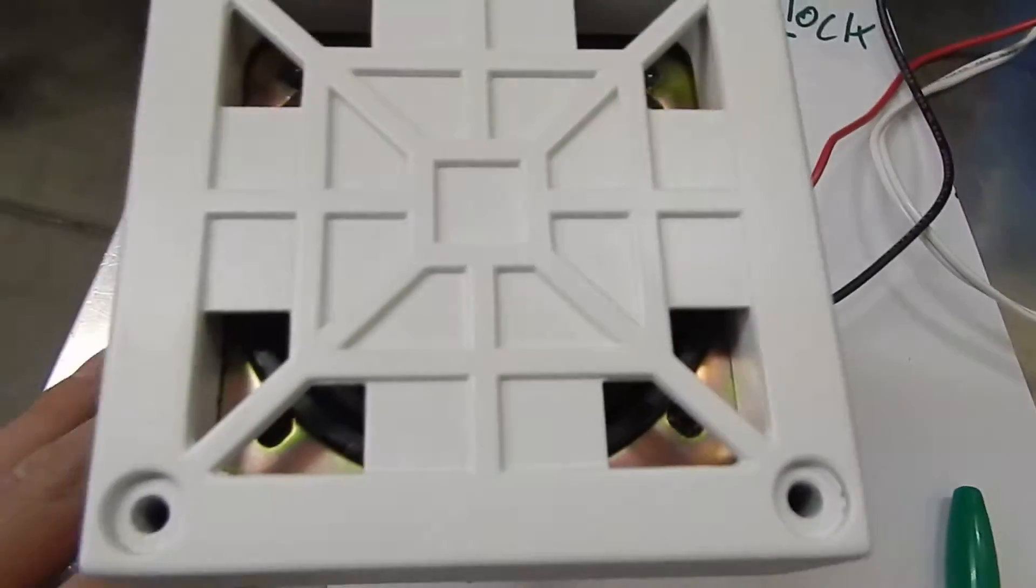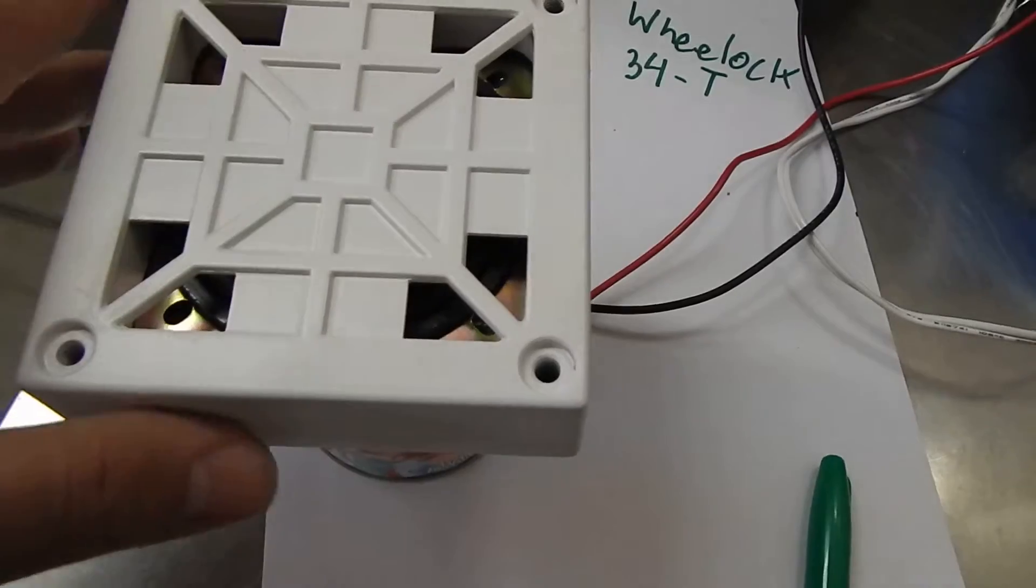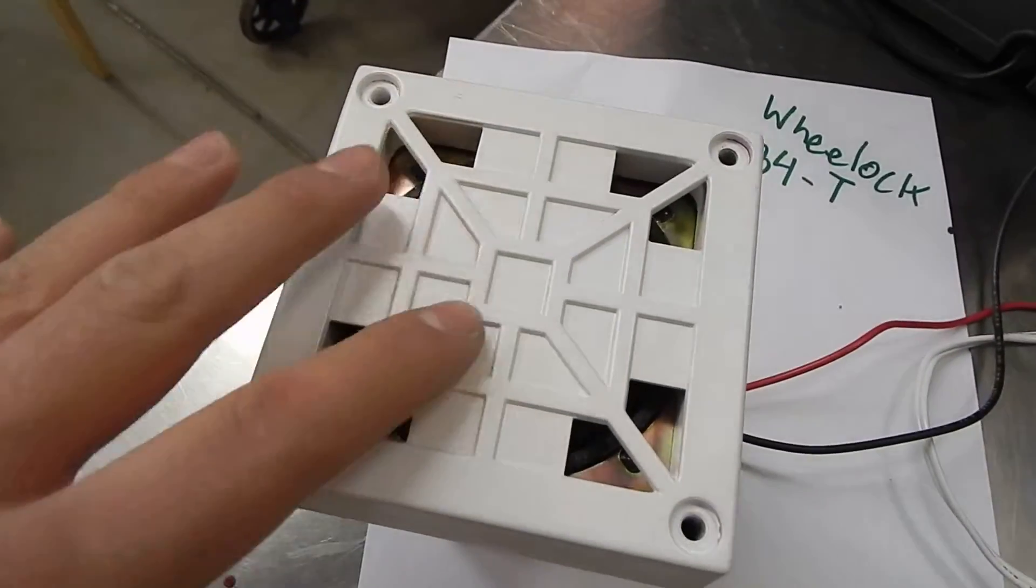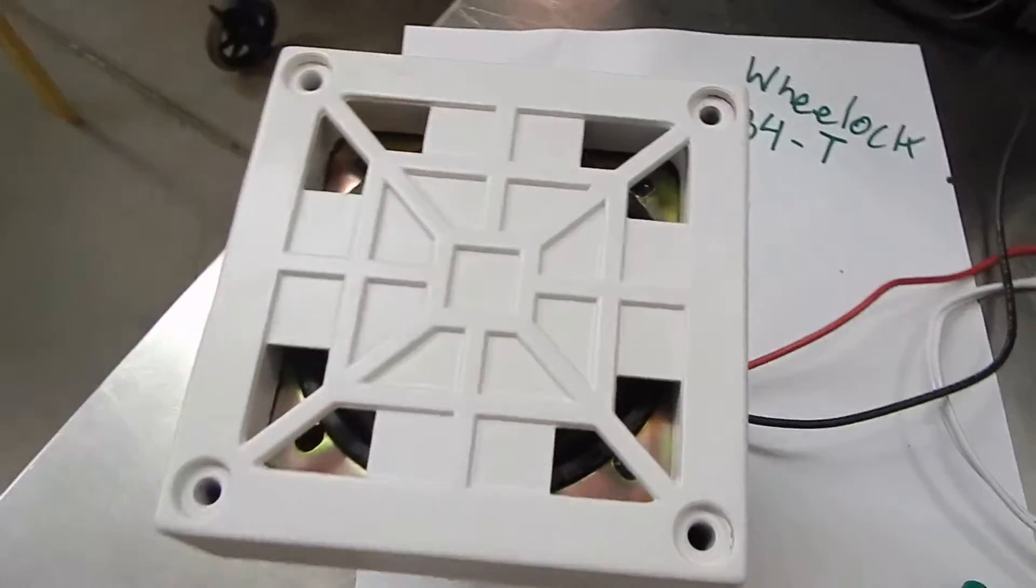This is my Wheelock 34T horn. As you can tell, I modified it. This used to be red, but I spray painted it white with some Rust-Oleum spray paint here. That guy right there.